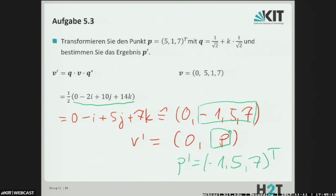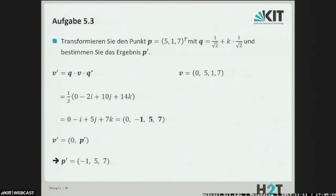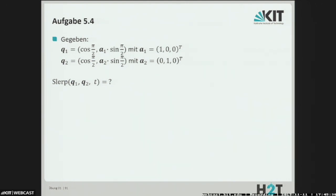That is of course a bit laborious to do by hand, but a computer can do it. That is essentially the procedure for this rotation with unit quaternions. The SLERP task is about doing interpolation by hand once — that is one of the advantages of quaternions compared to Euler angles or rotation matrices: you can interpolate very easily in rotation space. Here two quaternions are given and we should apply the general formula for Spherical Linear Interpolation.